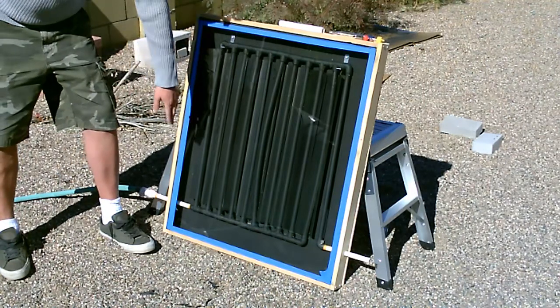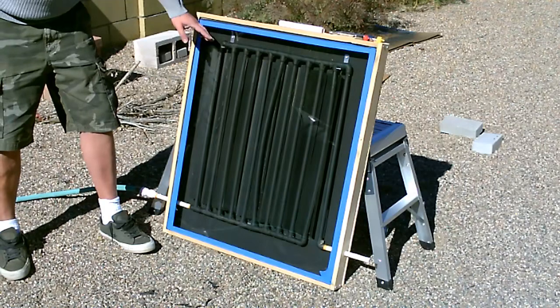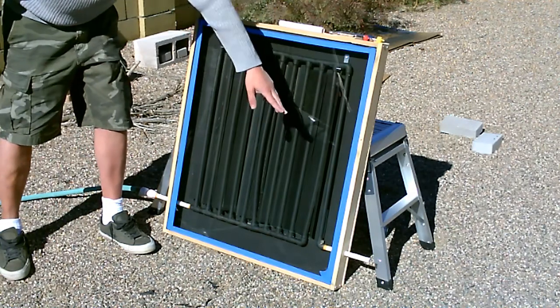Quick talk through. Water comes in the bottom, goes along, slowly fills each one of the 10 tubes till it gets to the top. Water recombines, it's hot water, goes down the drain pipe and out.